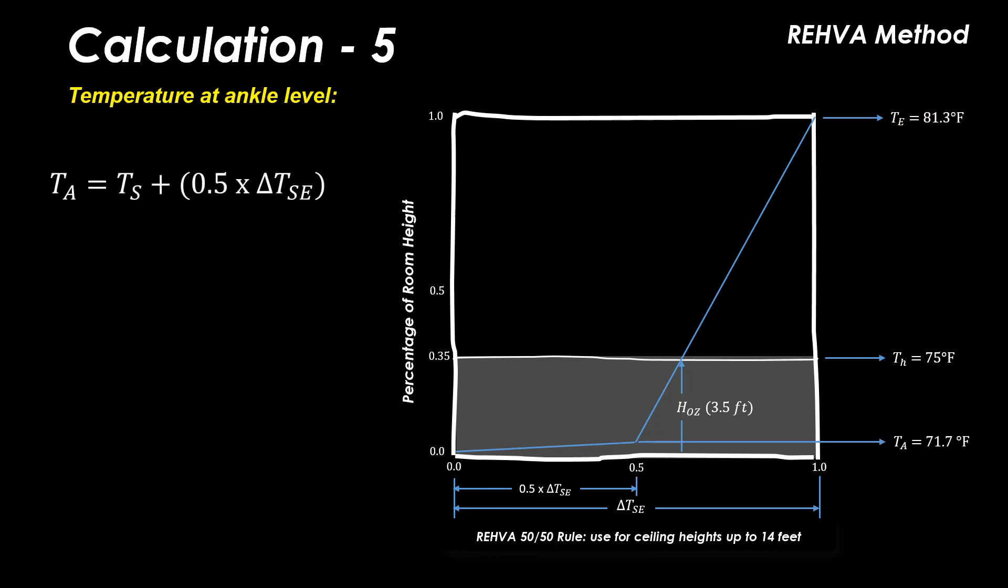Now the ankle level temperature can be calculated by adding half the overall supply exhaust delta T to the supply air differential of 62°F, resulting in 71.7°F.